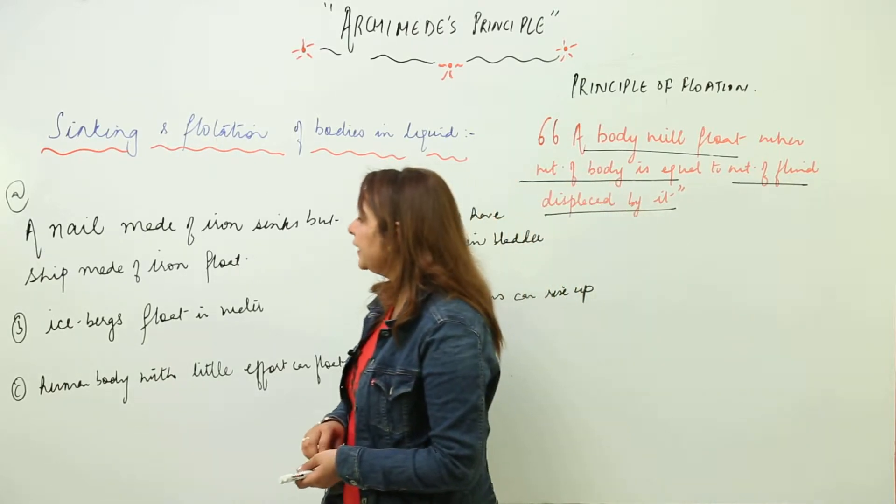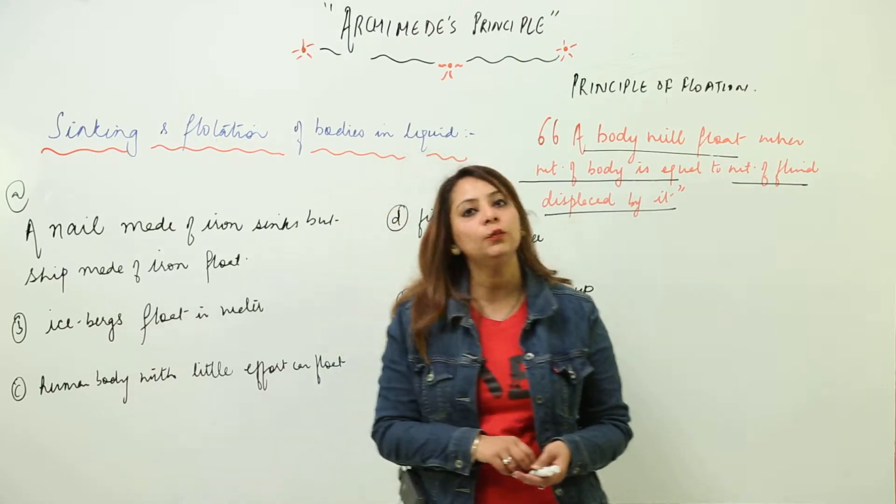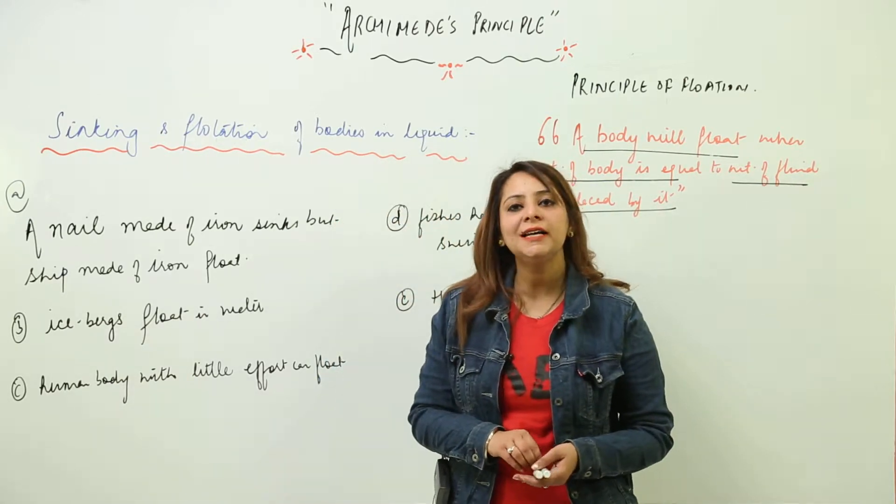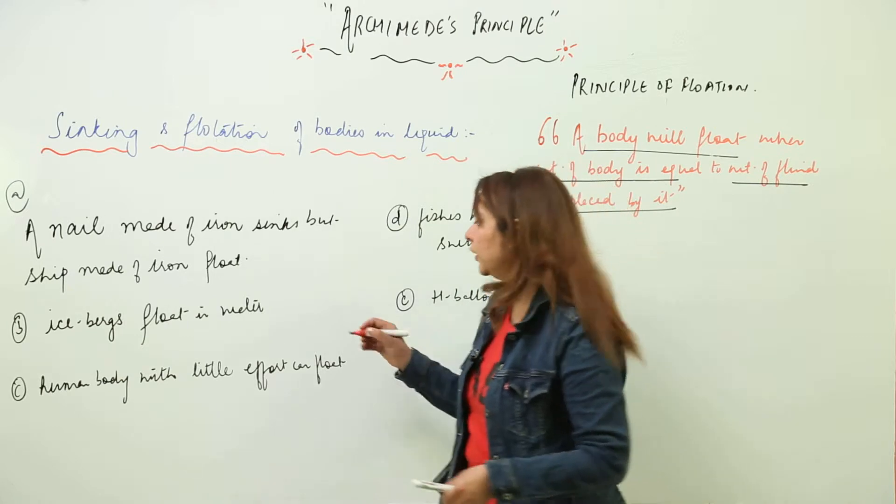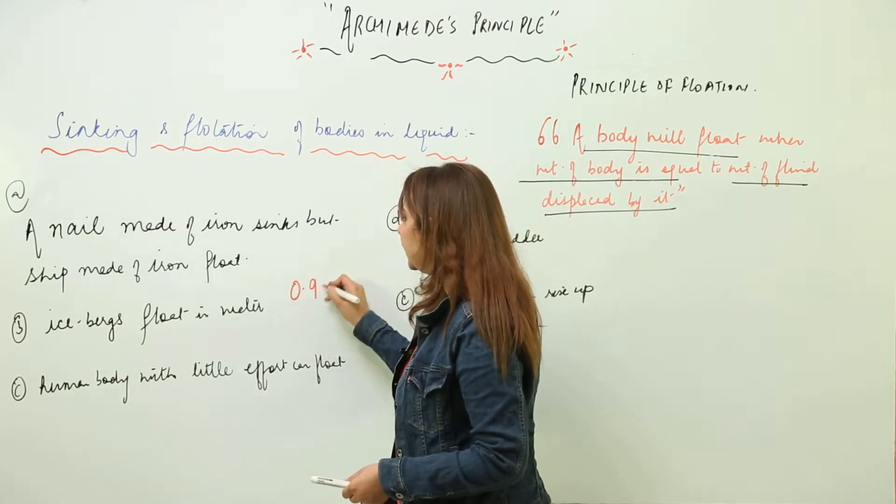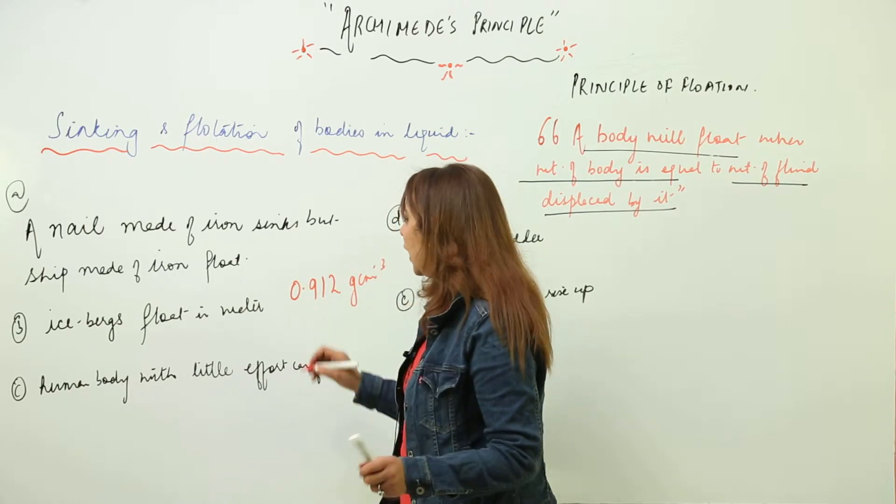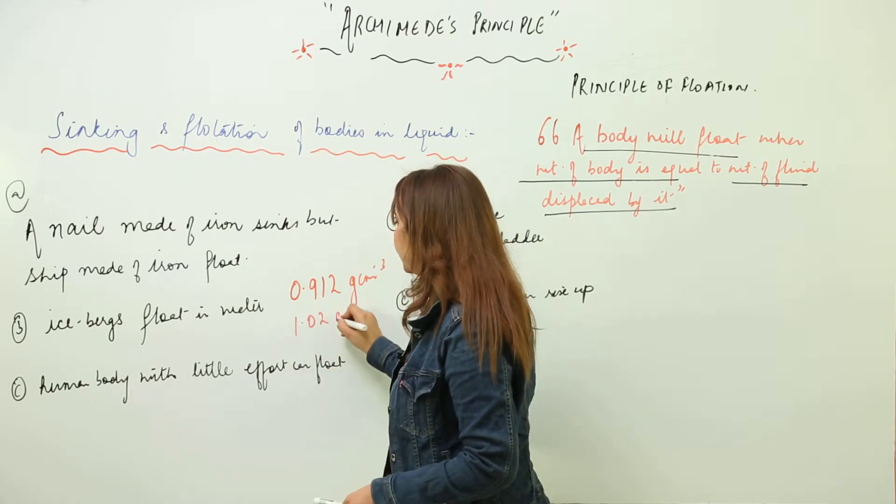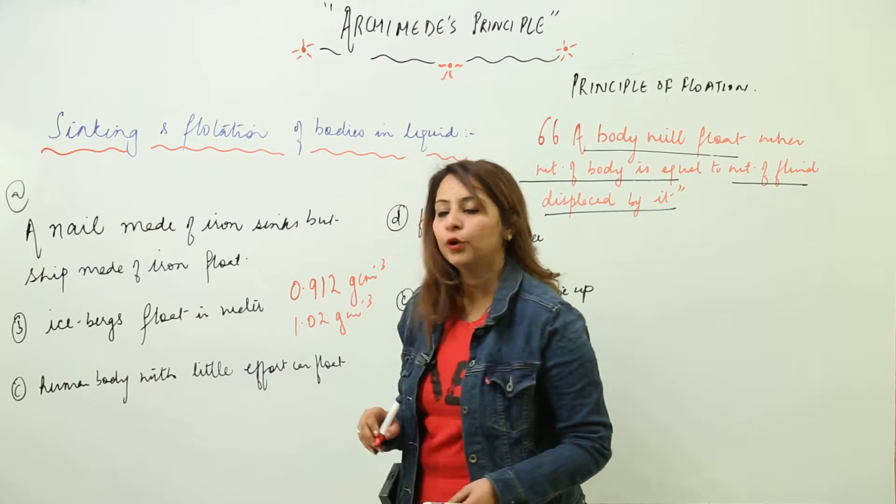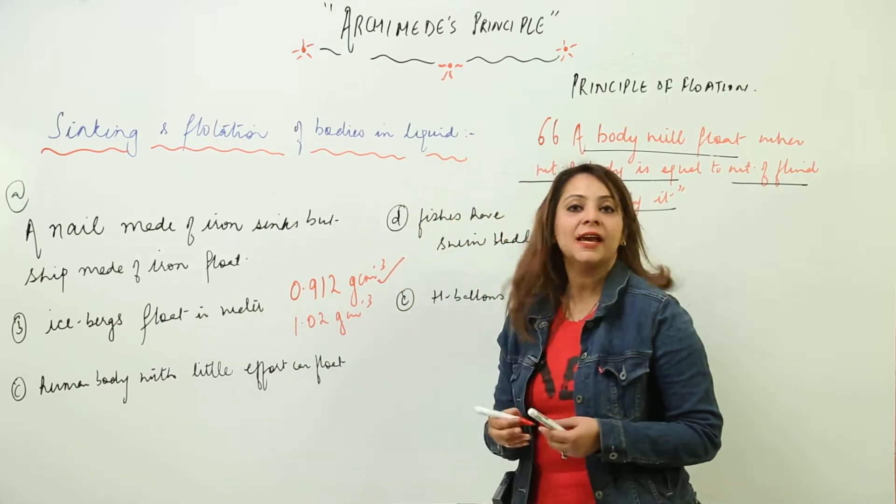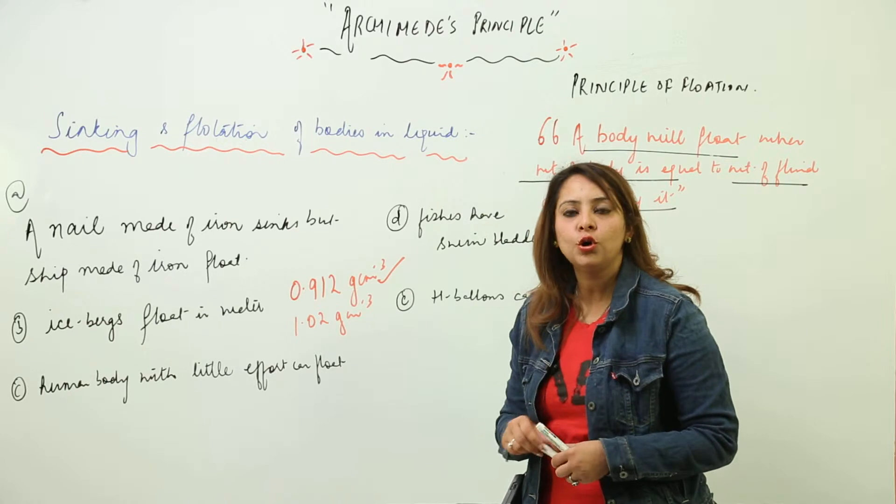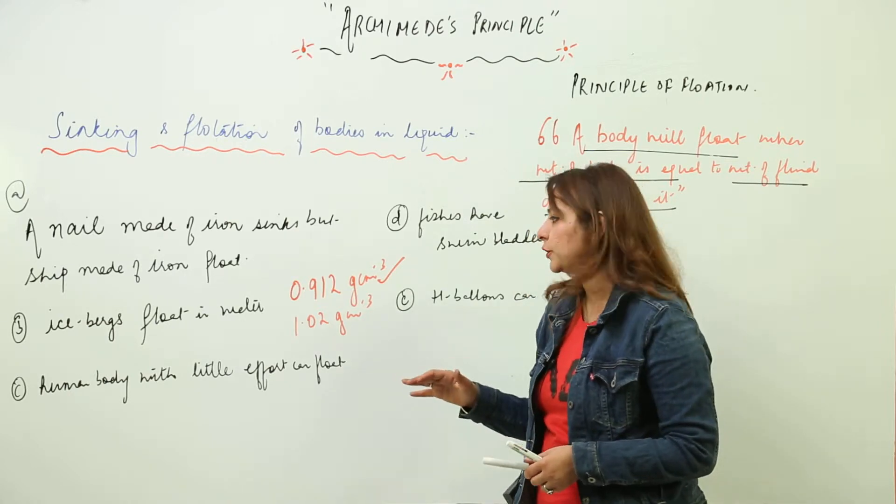Second, we see that icebergs float in water. Ice actually has lower density than water. Ice has approximately 0.912 gram per centimeter cube density and density of water is 1.02 gram per centimeter cube. Obviously, density of ice is less than water so it can float on the surface of water.